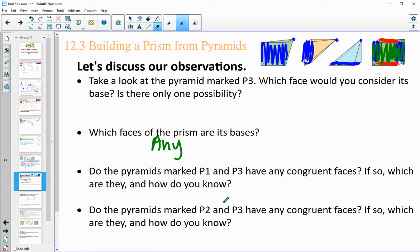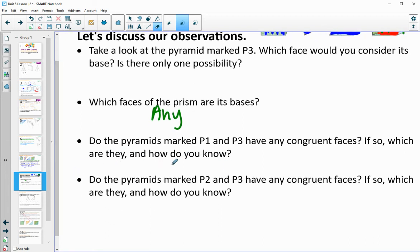So do the pyramids marked P1 and P3 have any congruent faces? If so, which ones? Yes, they do. You'd have to look at those in person to figure out which faces are congruent. But you could set them with each other and see that in P1 and P3, there is a congruent face. And in P2 and P3, there is a congruent face.